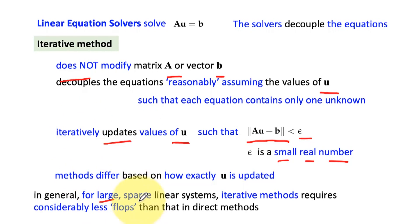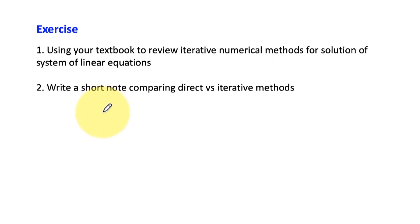Usually in large sparse linear systems, iterative methods require considerably less operations or less floating-point operations than direct methods. You can now go back to your textbook and look at the discussion on iterative methods for solution of system of equations, and then based on what you study from your textbook, you write a short note comparing direct and iterative methods. That's all for this lecture. I'll see you in next class.